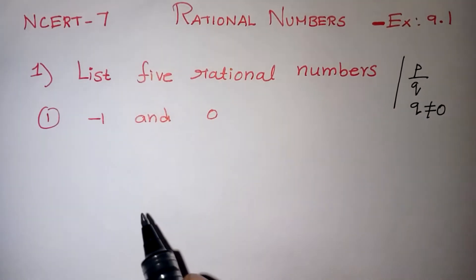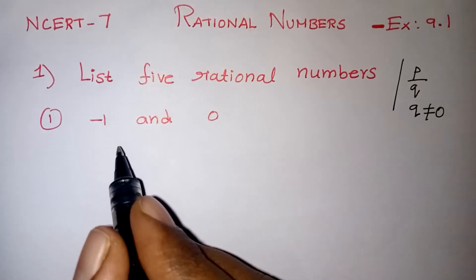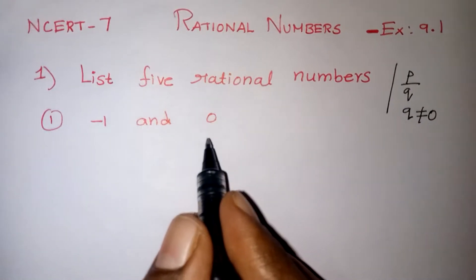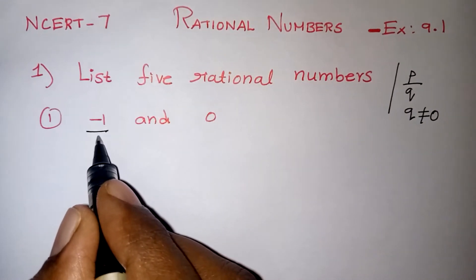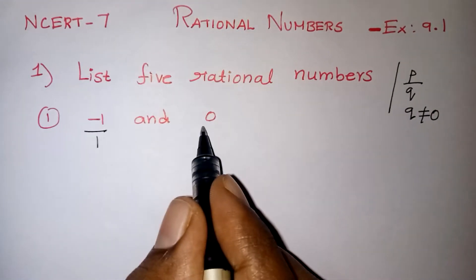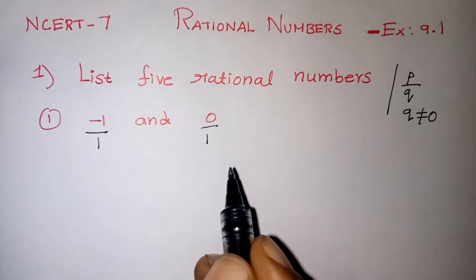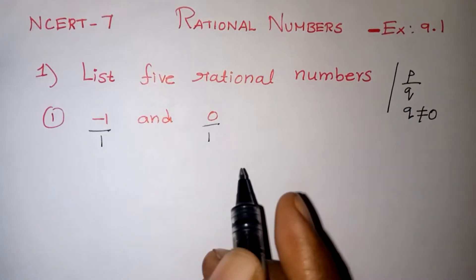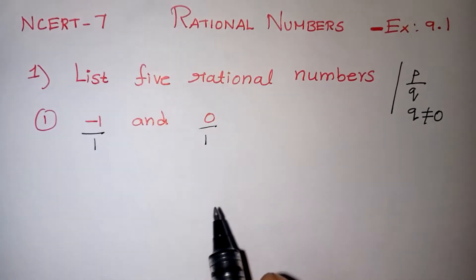Here the numbers are integers and no denominator is given. So we have to assume the denominator is 1. If any number is given without a denominator, we have to take it as 1. That is the first step in rational number problems.